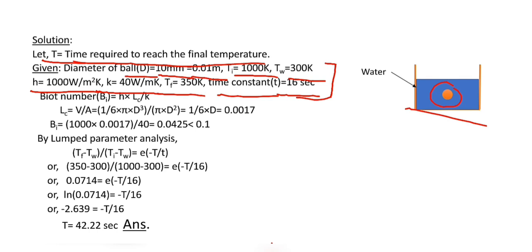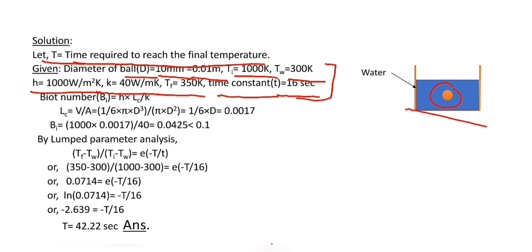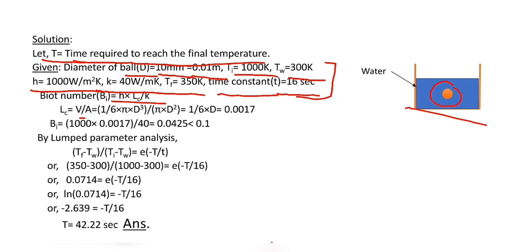For the analysis of unsteady heat conduction, we use lumped parameter analysis. We know lumped parameter analysis is only applicable when Biot number is less than 0.1. Biot number is equal to convective heat transfer coefficient into characteristic length divided by thermal conductivity.